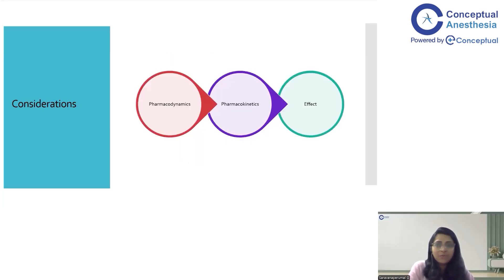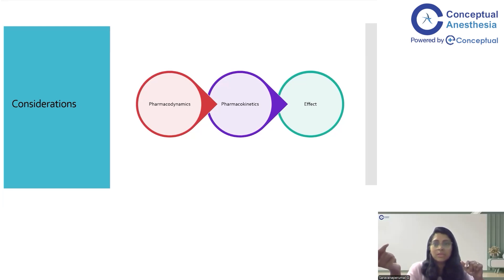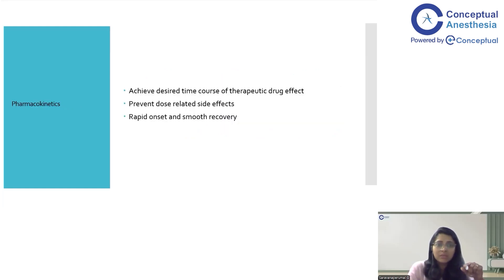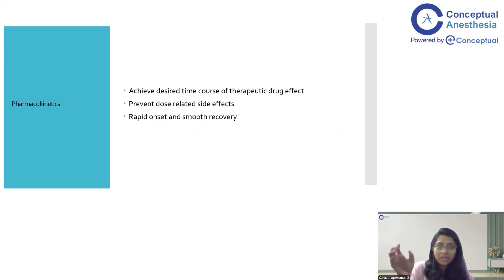When considering TIVA, the major concerns are: what is the drug doing to the body, what is the body doing to the drug, and what effect you achieve. These three interplays are very important in any drug metabolism and action. You need to consider pharmacodynamics and pharmacokinetics — you need a therapeutic concentration level to achieve a desired effect, which is the depth of anesthesia, while also being very sure you are avoiding dose-related side effects for that particular agent.